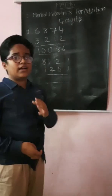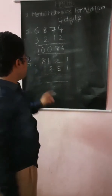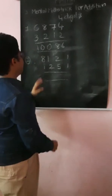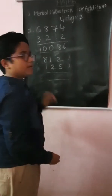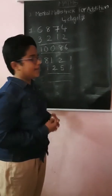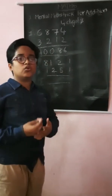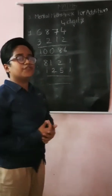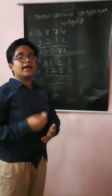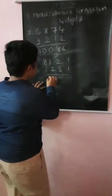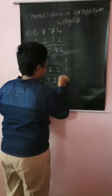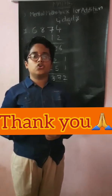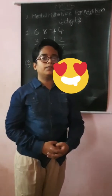Second problem: 8121 plus 1251. 8000 plus 1000 is 9000. And 100 plus 200 is 300. And 20 plus 50 is 70. And 1 plus 1 is 2. The answer is 9372. I hope you all enjoyed this video. Thank you.